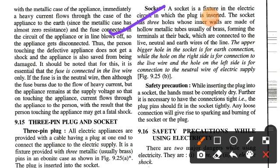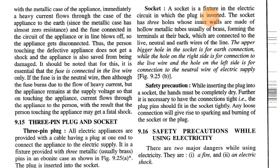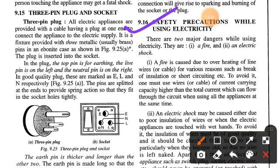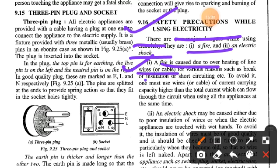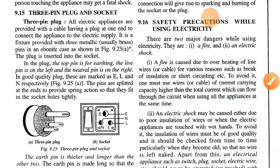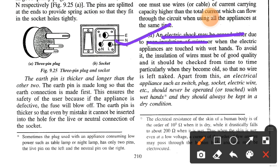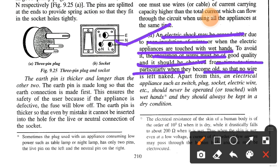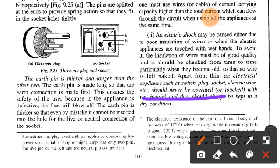You can read the working of the socket by yourself. Regarding safety precautions: there are two major dangers while using electricity — fire and electric shock. Fire is caused due to overheating of a line wire or cable for various reasons such as breakage of insulation or short circuiting. To avoid it, one must use wires of current carrying capacity higher than the total current which can flow through the circuit when using all appliances at the same time. Electric shock may be caused due to poor insulation of wires or when electric appliances are touched with wet hands. To avoid it, insulation of wires must be of good quality and checked from time to time, especially when they become old, so that no wire is left naked. Electrical appliances such as switches, plugs, and sockets should never be operated with wet hands and should be kept in a dry condition.